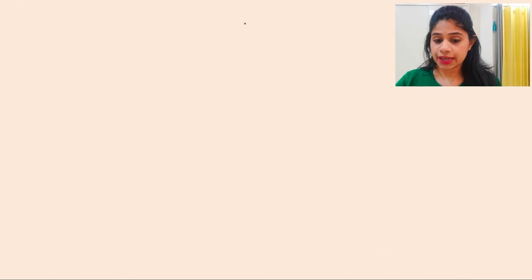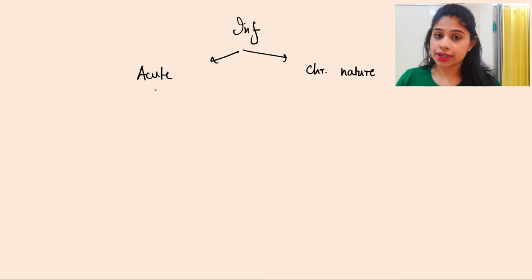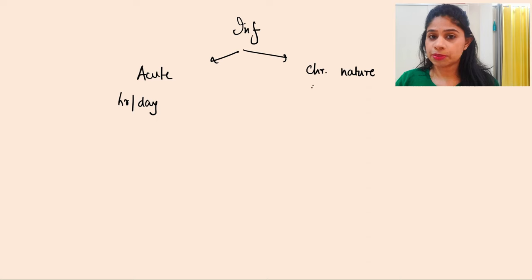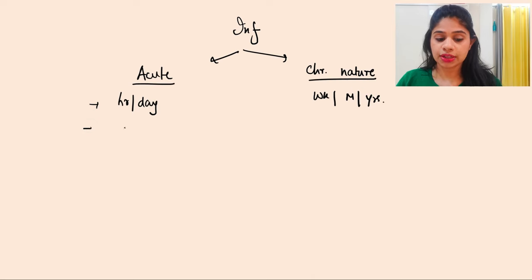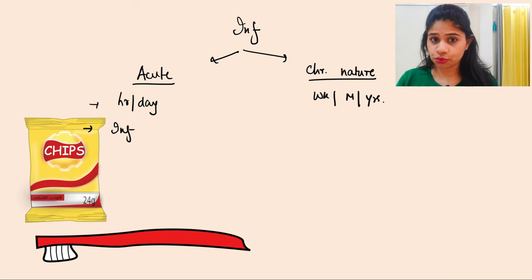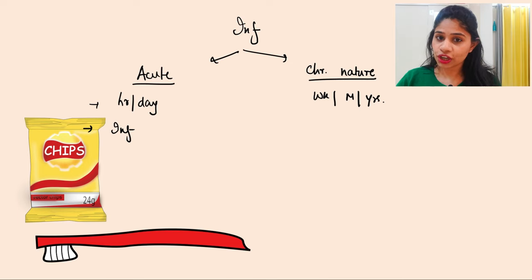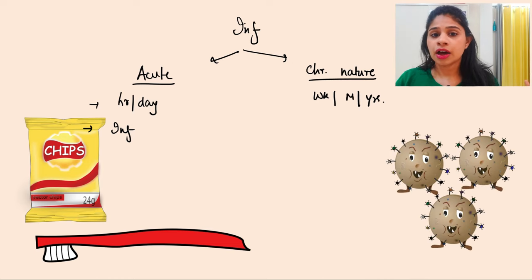Inflammation can be of two different types: acute and chronic. Acute is of sudden onset, occurring within hours or days, whereas chronic inflammation is prolonged, occurring over weeks, months, or even years. Acute is associated with injury — for example, eating hard food or toothbrush trauma can cause acute inflammation to the gums — whereas chronic is caused by offending agents such as bacteria, viruses, and foreign substances.